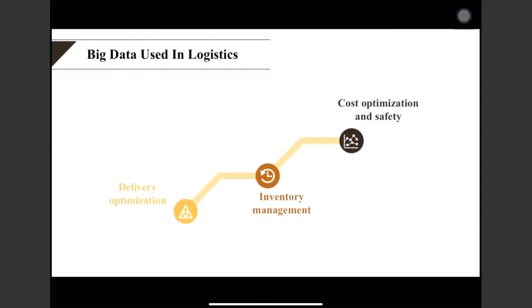In logistics, companies can collect data through GPS trackers, telemetry systems, and weather and traffic monitoring services to generate real-time optimized distribution routes. Big data makes inventory management more effective by analyzing data for each customer over a specific period to predict demand, prepare goods in advance, and reduce delivery time. Logistics companies also use big data to track cargo transportation status, including fuel usage and vehicle health, which optimizes cost and improves driver safety.